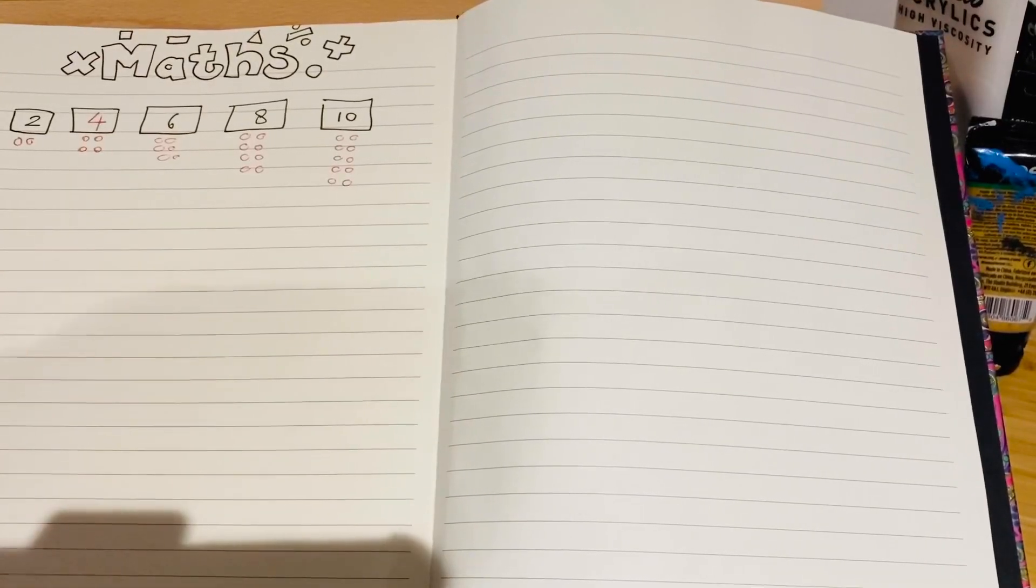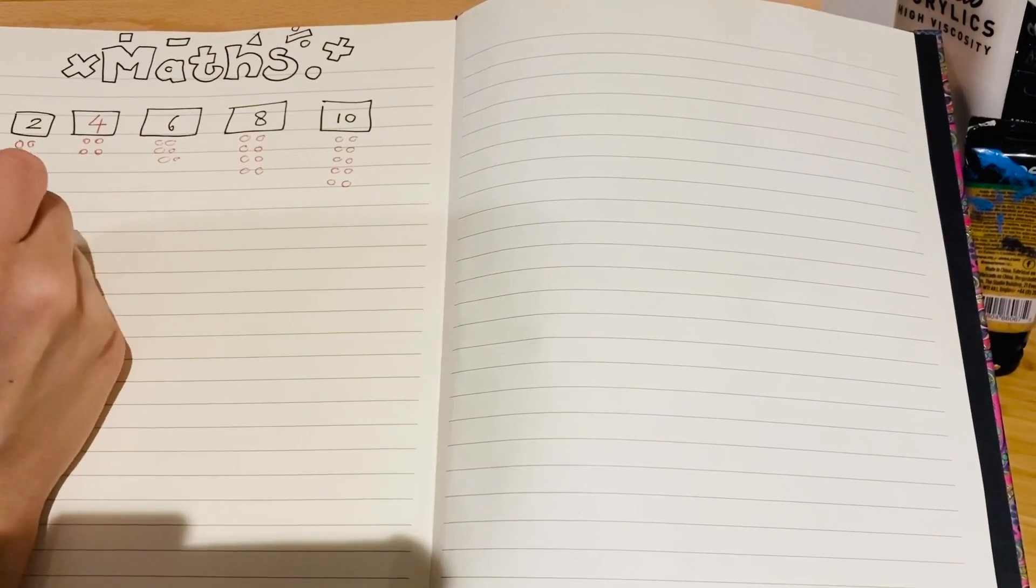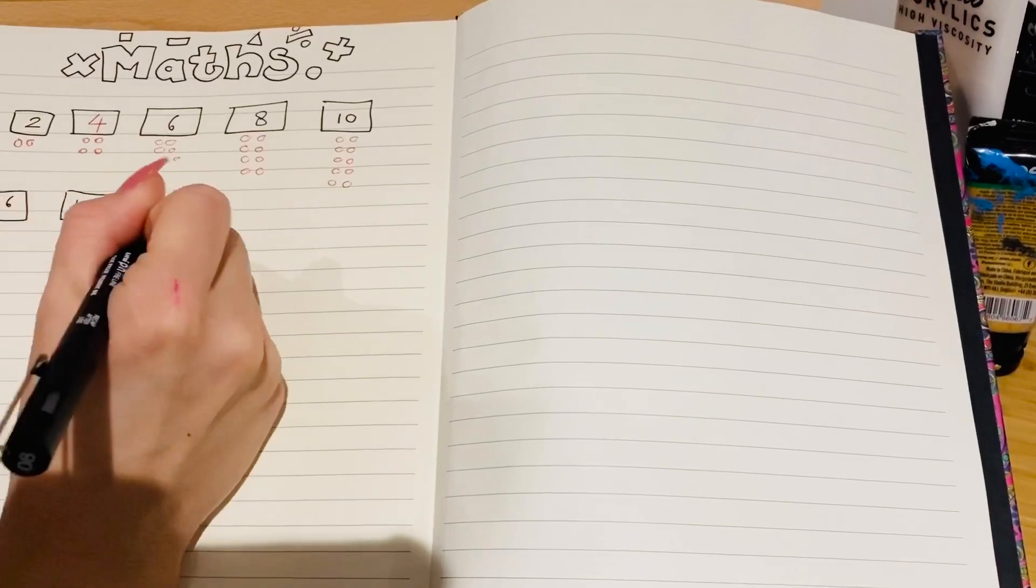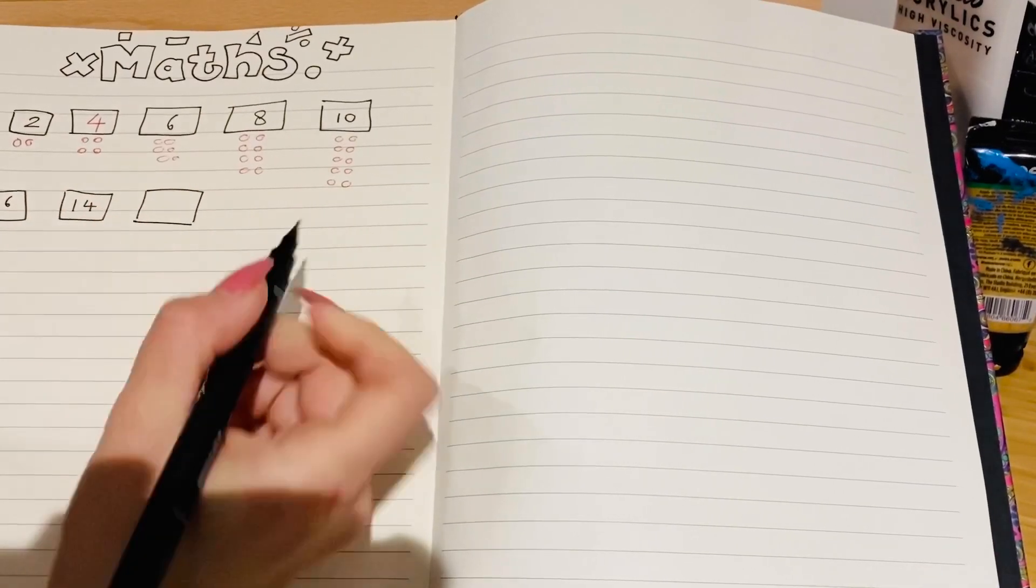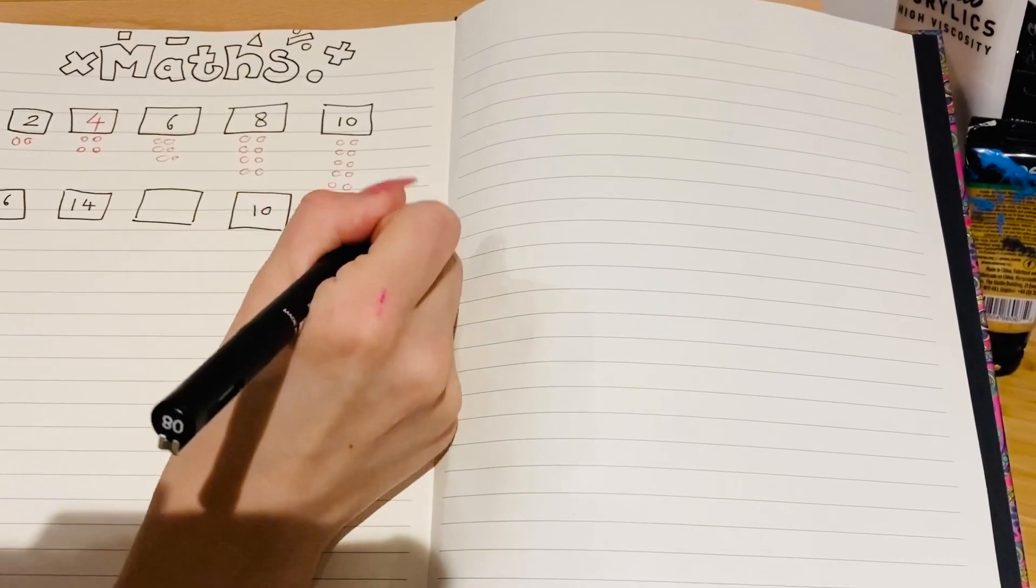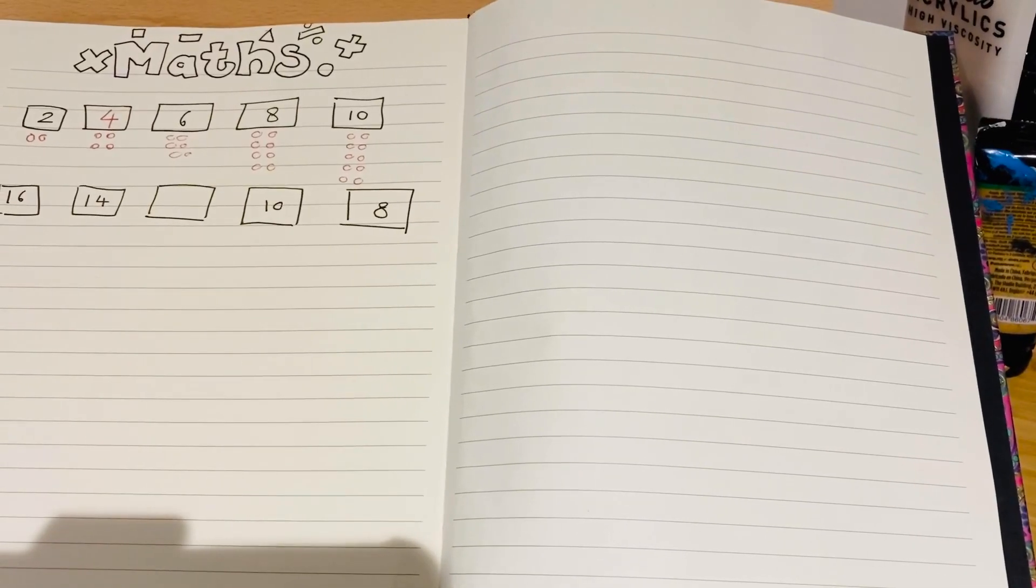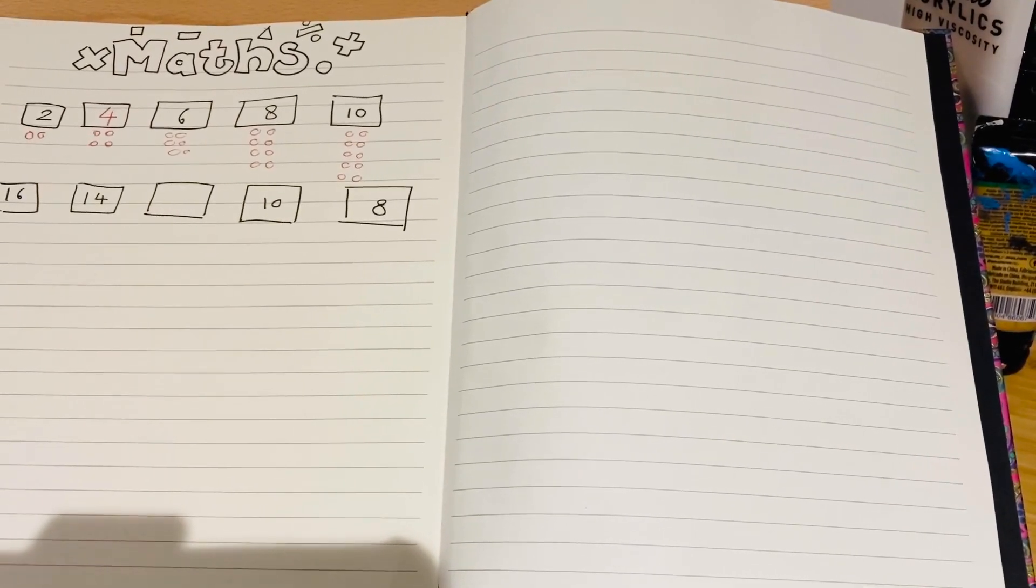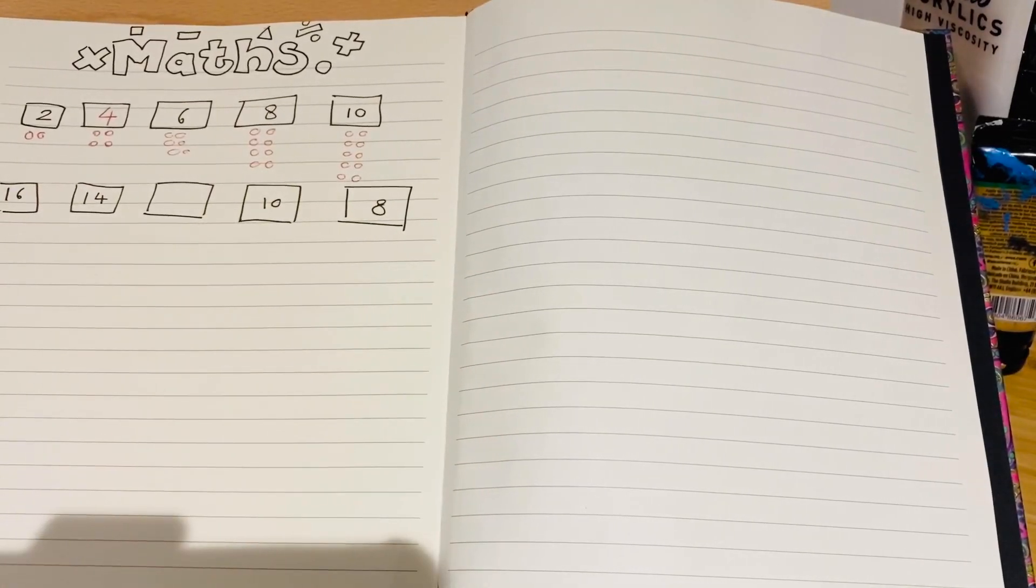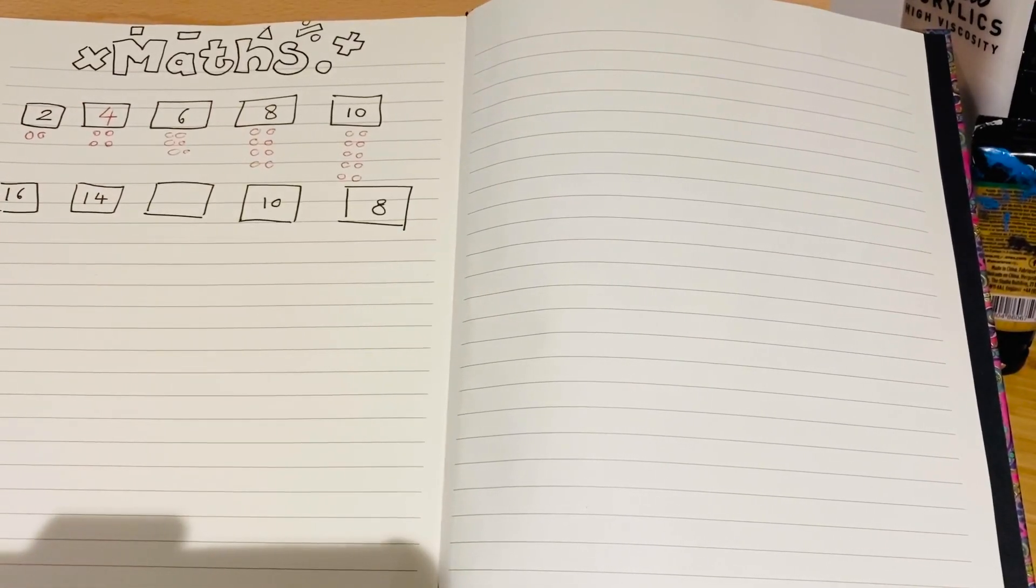The next number pattern I'm going to show you is slightly different. You might see something like this in any quizzes that you might take. So I'm going to start off with sixteen, then we're going to go fourteen, then a missing number, and then ten, and then eight. To find out this missing number, it will be a lot easier if you already know some of your times tables that we've been practicing.